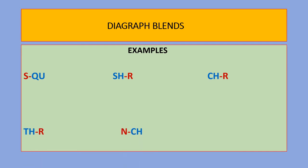When R is added to TH, the sound produced is THR as in through. When NCH is added to CH, the sound produced is NCH as in lunch or bench.